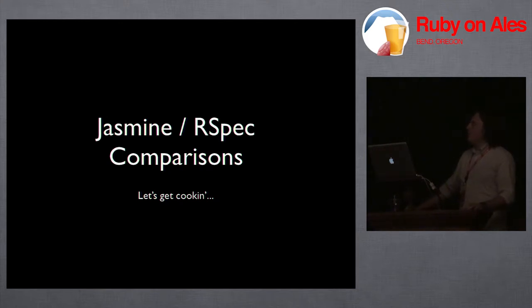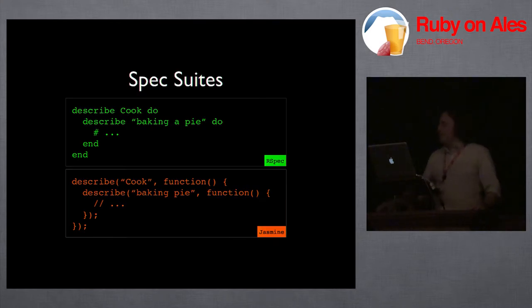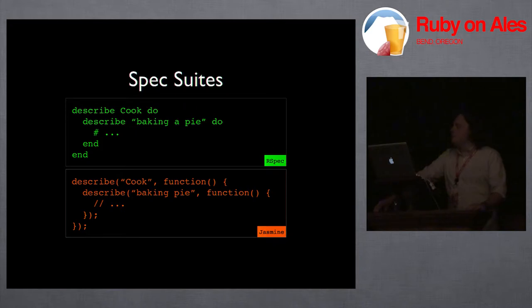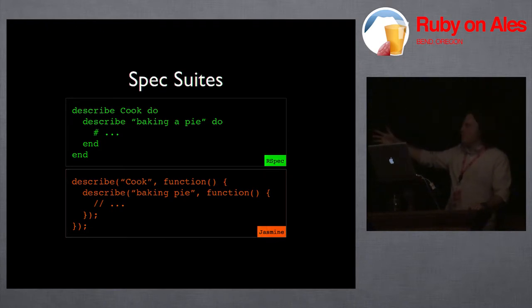At this point I want to use RSpec as a point of comparison to show you what Jasmine code actually looks like. All of our specs and expectations are going to be grouped into describe blocks. On the top I'm going to show the RSpec code, and on the bottom I'm going to show the Jasmine code that is essentially equivalent.